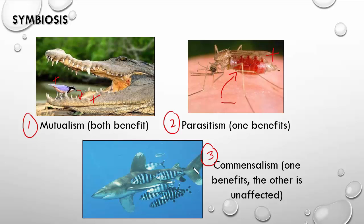Finally, commensalism: one organism benefits and the other is unaffected — no benefit and no harm. For example, small fish follow a shark for protection and food scraps from the shark's meals, but the fish provide no benefit to the shark whatsoever. So commensalism is a one-way street: one benefits and the other is unaffected. That's everything I wanted to cover in this short video tutorial. Thank you for watching.